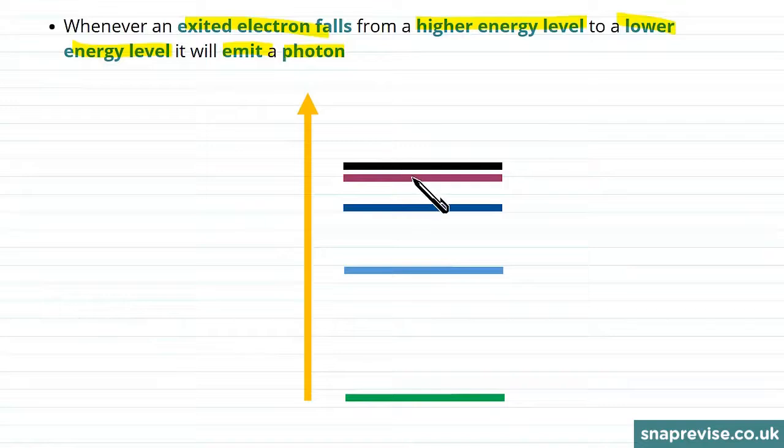Let's imagine we have an electron at some level and it goes down to a lower energy level, then it is going to emit a photon.